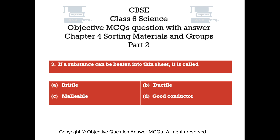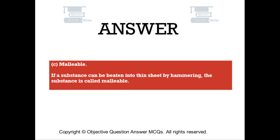Question number 3. If a substance can be beaten into thin sheet, it is called — Option A: Brittle. Option B: Ductile. Option C: Malleable. Option D: Good Conductor. The right answer is Option C — Malleable. If a substance can be beaten into thin sheet by hammering, the substance is called malleable.